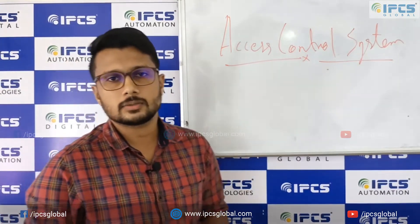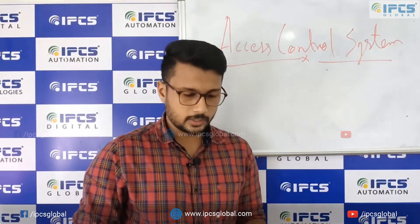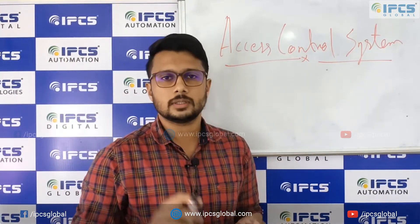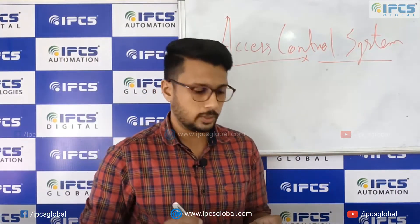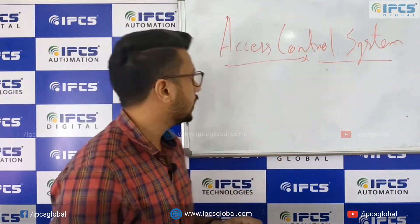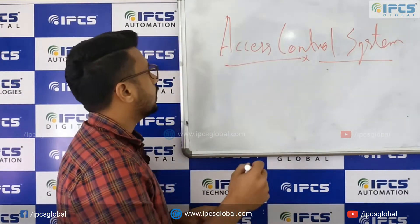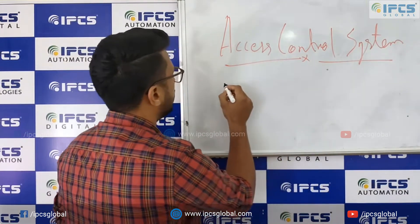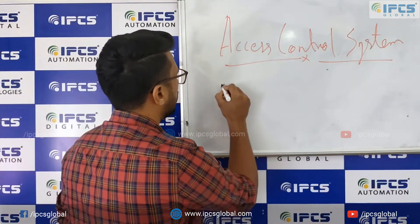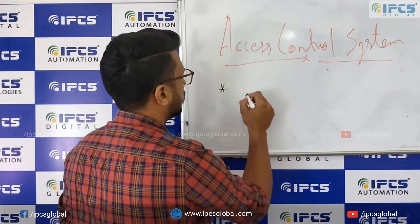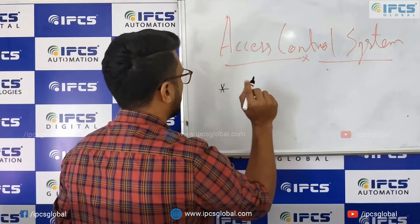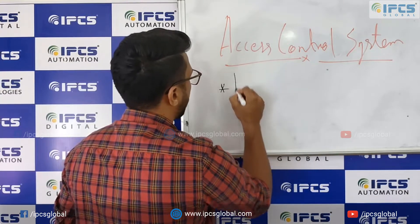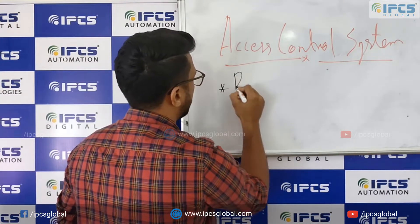So, what are the components in an access control system? I'll be roughly explaining all the components in this part one video. An access control system consists of mainly three components. The first one is a reader.